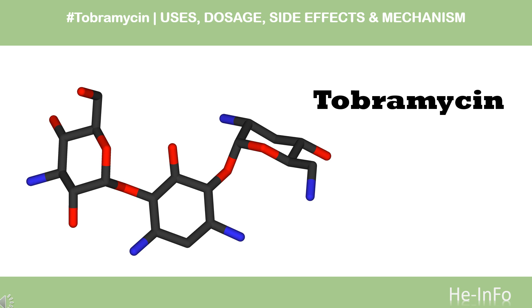Tobramycin is an aminoglycoside antibiotic used to treat cystic fibrosis-associated bacteria, lower respiratory tract, urinary tract, eye, skin, bone, and skin structure infections.